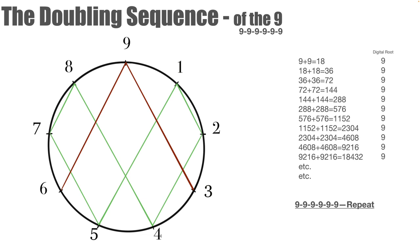Then we've got the doubling sequence of the nine, which has its own doubling sequence unique to the nine. The nine alone only produces itself as its digital root when it's submitted to the doubling sequence.